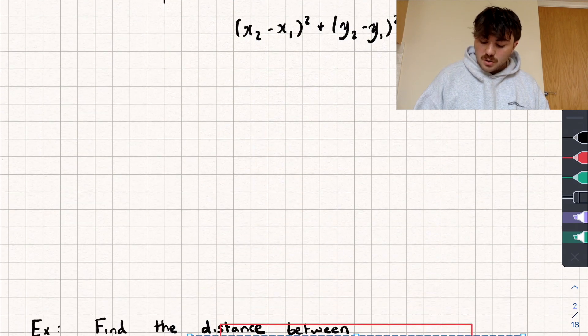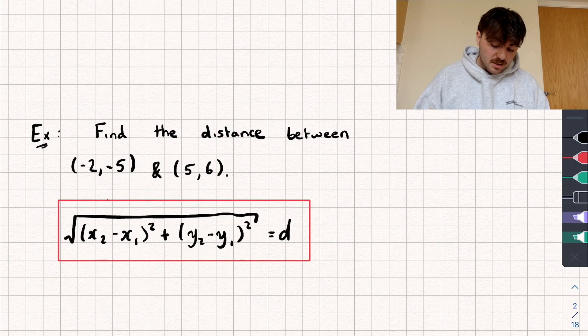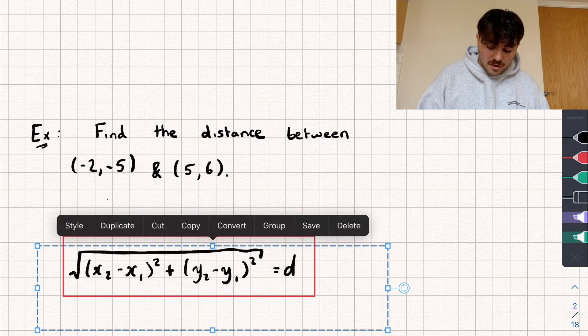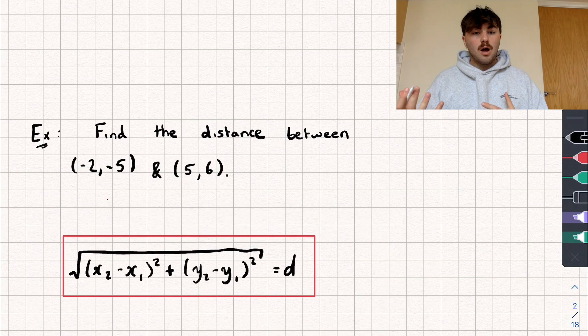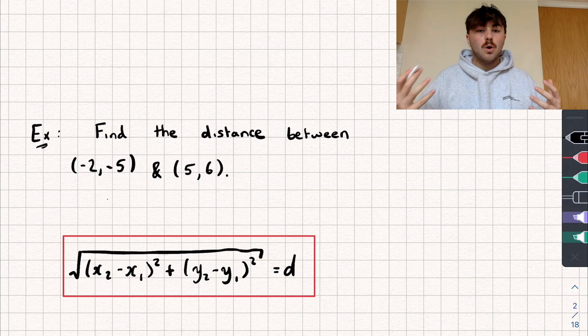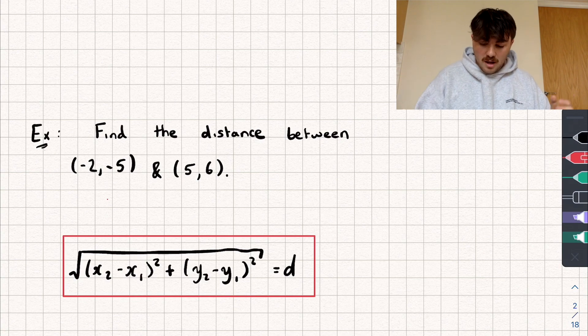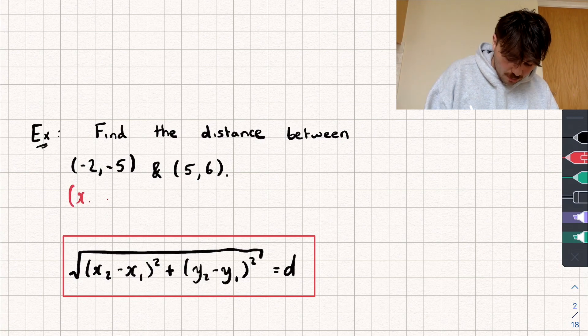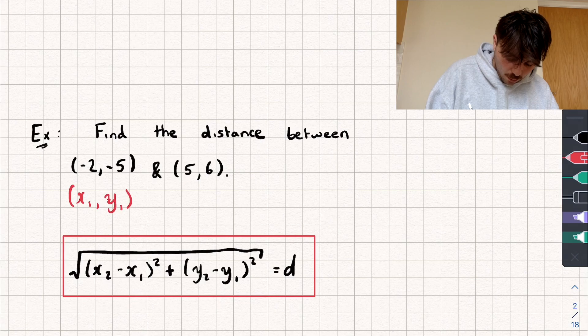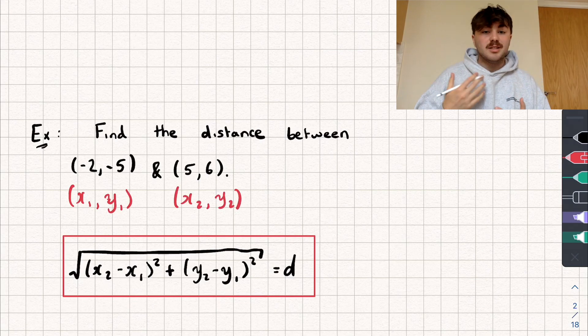So now let's use this formula to answer a question. So here we just need to find the distance between the two points, (-2, -5) and (5, 6). So I want one of these points to be my x1, y1 coordinate and one to be my x2, y2, and it doesn't matter which one I want. So just for convenience, I'll call this my x1, y1 coordinate and this second one x2, y2. But it wouldn't really matter if we did it the other way around.